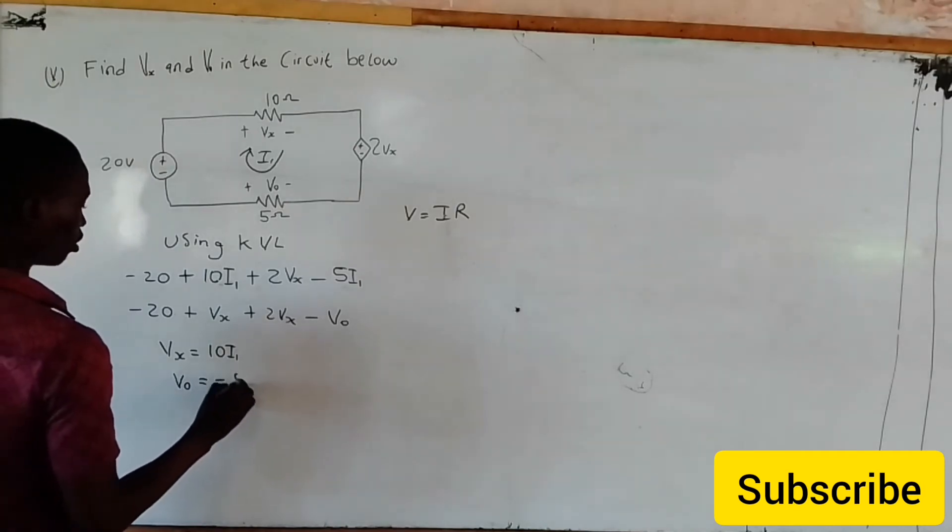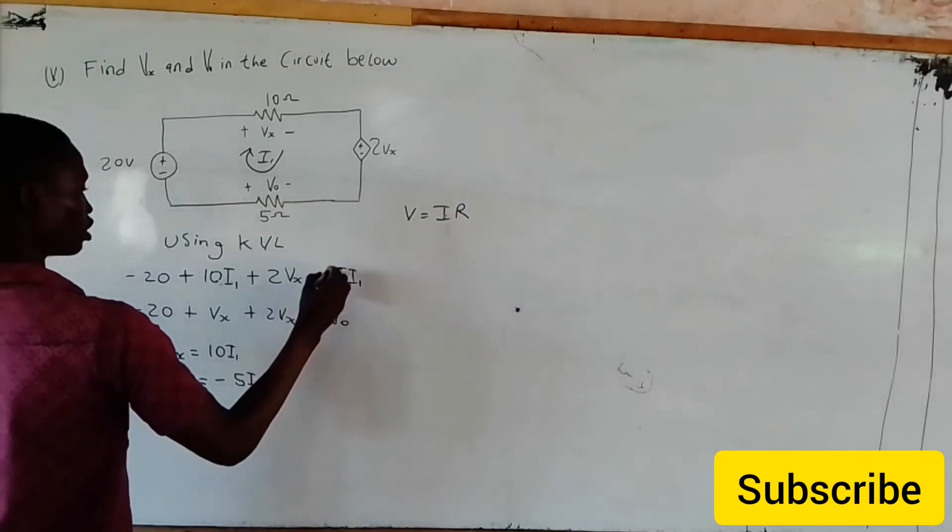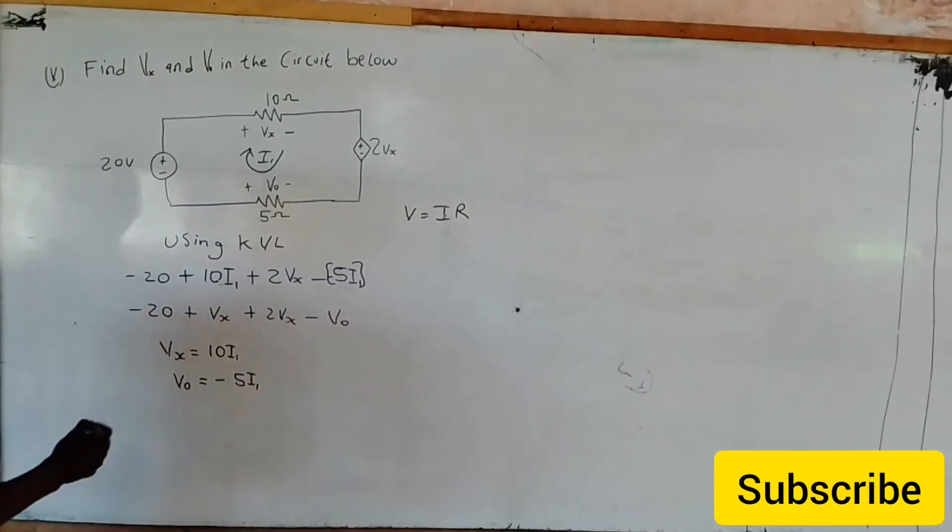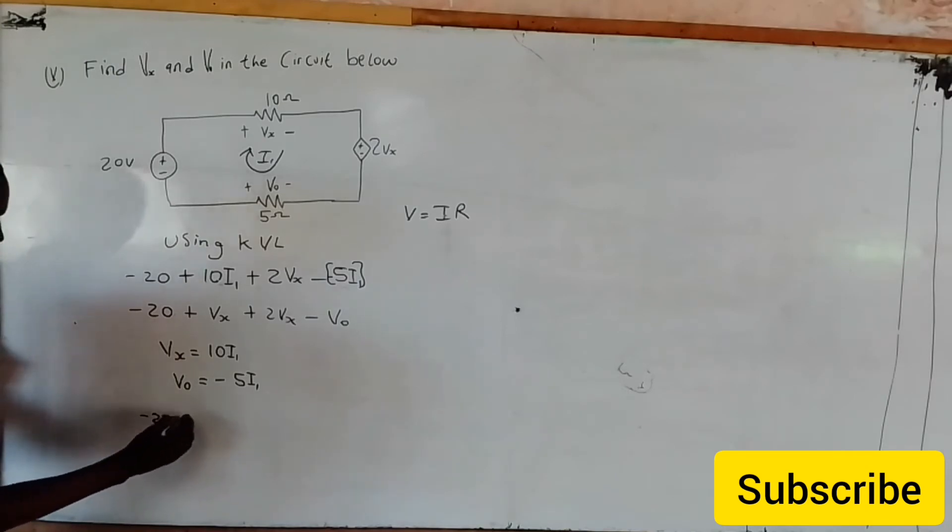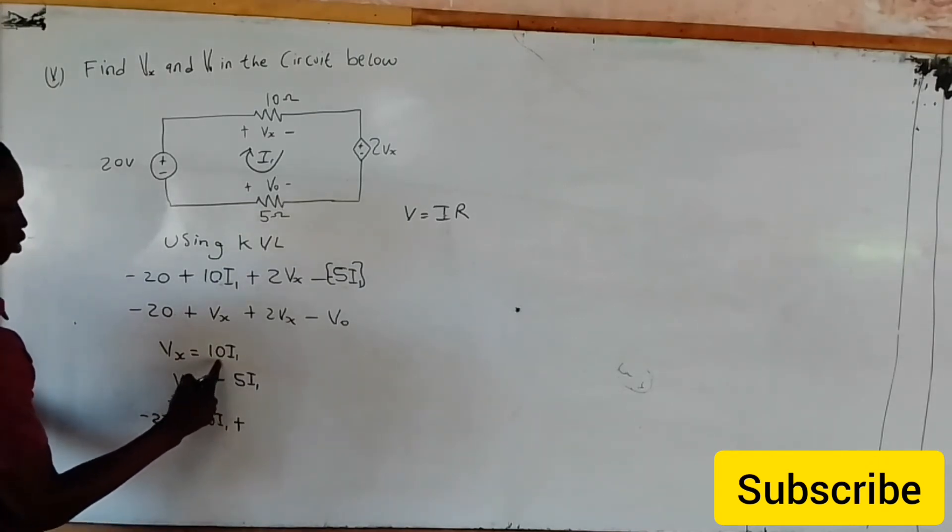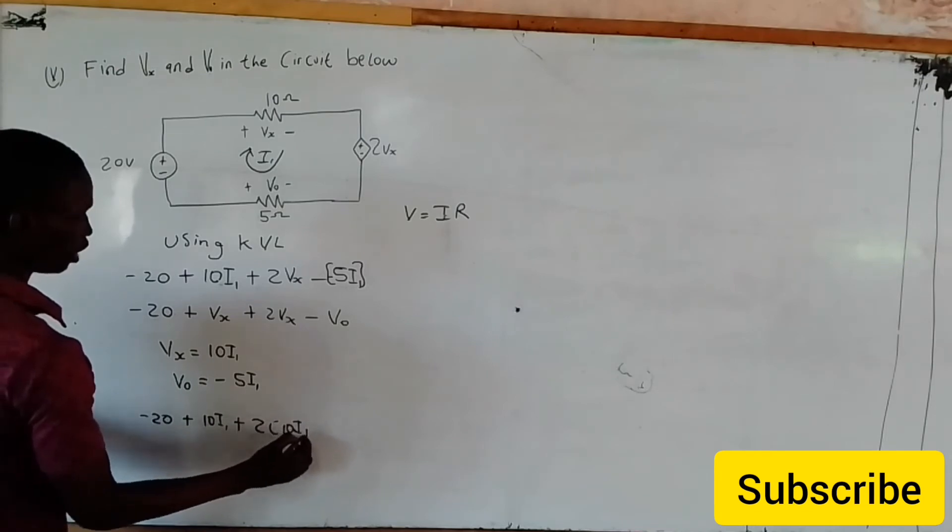So from here it goes minus 20 plus 10I1 plus, since Vs equals 10I1, so here will become 2 into bracket 10I1.